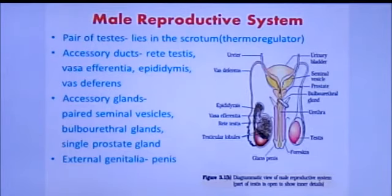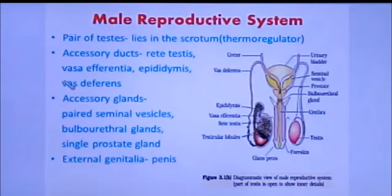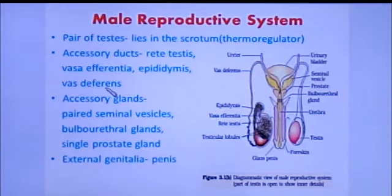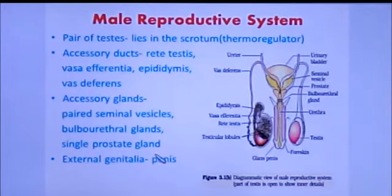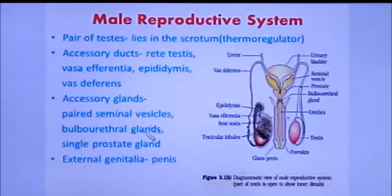External genitalia is the penis. So all these — a pair of testes, accessory ducts including rete testis, vasa efferentia, epididymis, and vas deferens, accessory glands including seminal vesicle, bulbourethral glands, and prostate gland, and external genitalia which is the penis — constitute the male reproductive system.